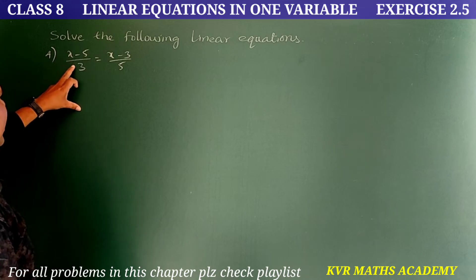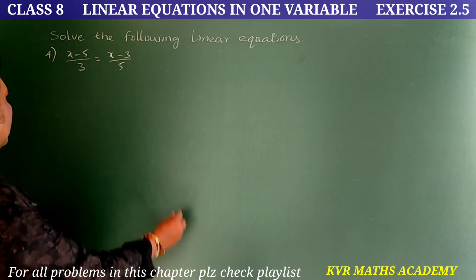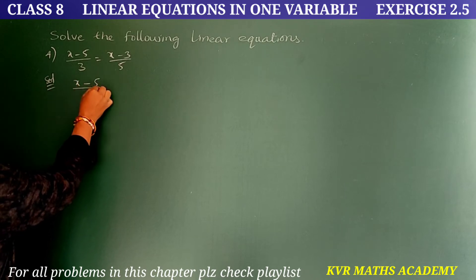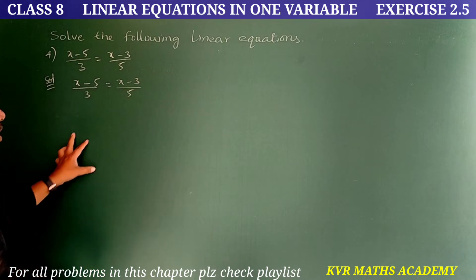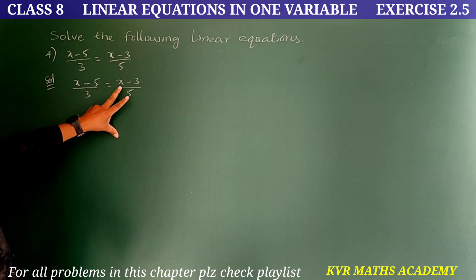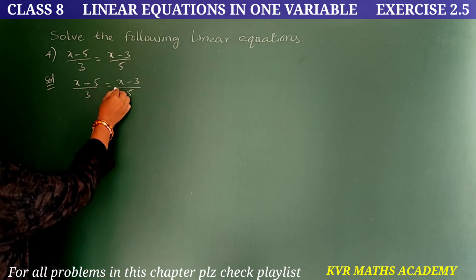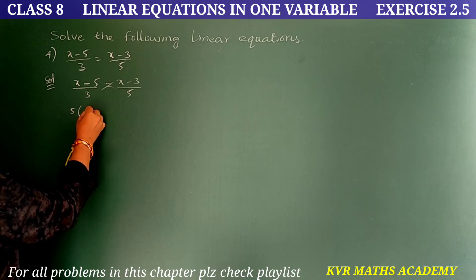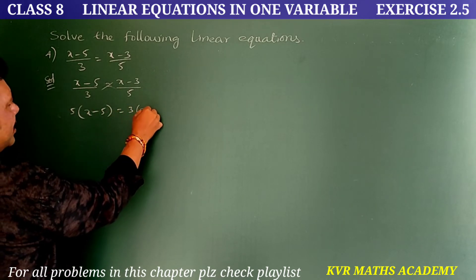Fourth question: (x - 5)/3 = (x - 3)/5. Solution — given equation is (x-5)/3 = (x-3)/5. Both sides have x with denominators, so do cross multiplication: 5(x - 5) = 3(x - 3).